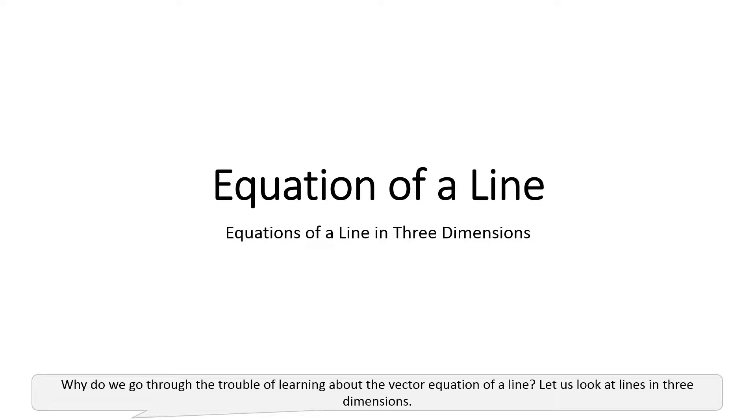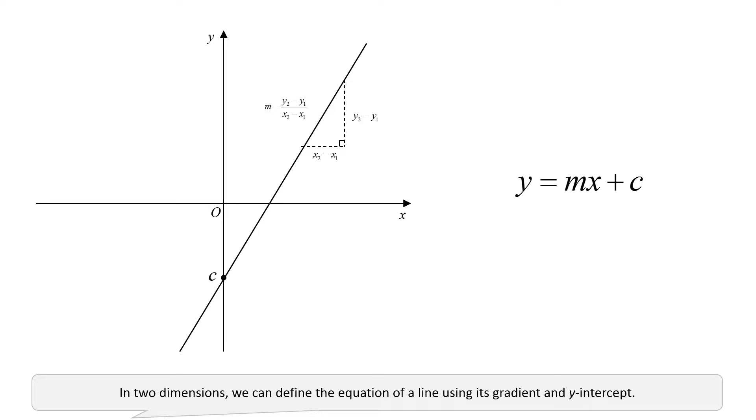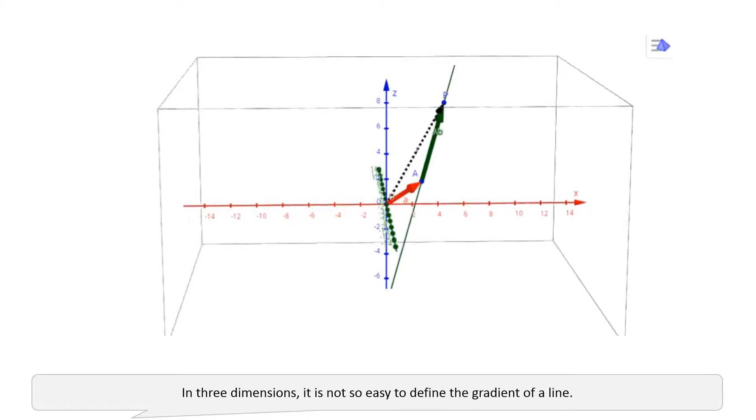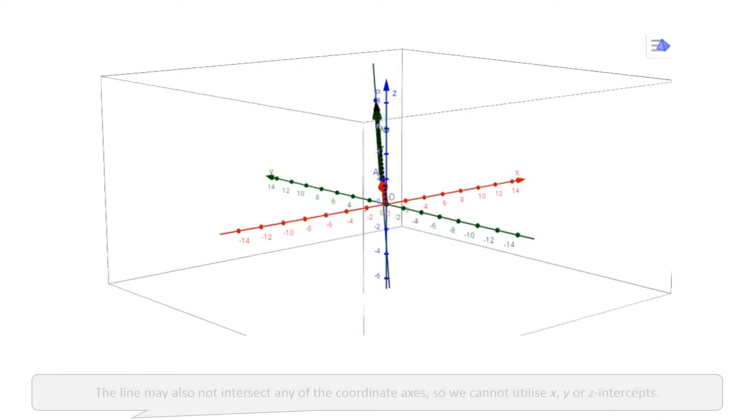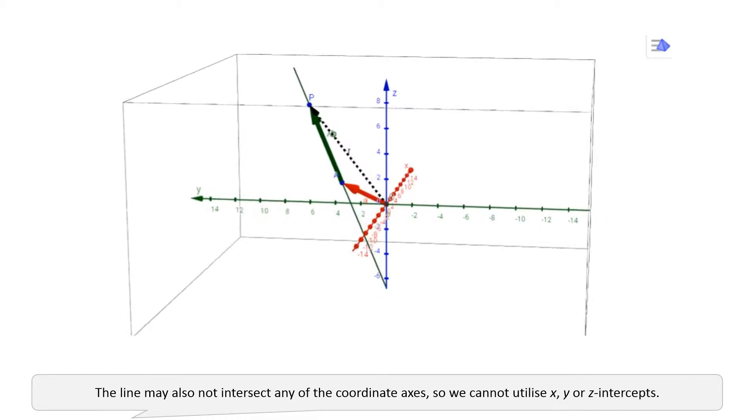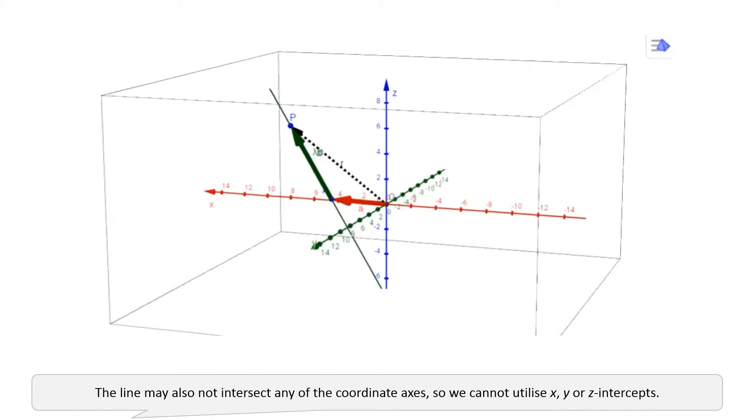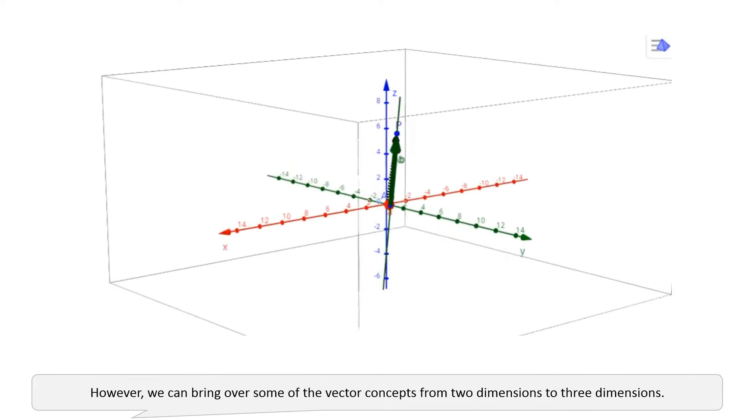Why do we go through the trouble of learning about the vector equation of a line? Let us look at lines in three dimensions. In two dimensions, we can define the equation of a line using its gradient and y-intercept. In three dimensions, it is not so easy to define the gradient of a line. The line may also not intercept any of the coordinate axes, so we cannot utilize x, y, or z-intercepts.